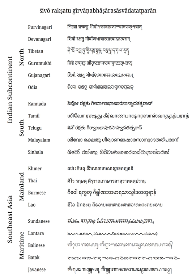The Brahmic scripts are a family of abugida, or alphabet writing systems. They are used throughout the Indian subcontinent, Southeast Asia and parts of East Asia, including Japan in the form of Siddham.